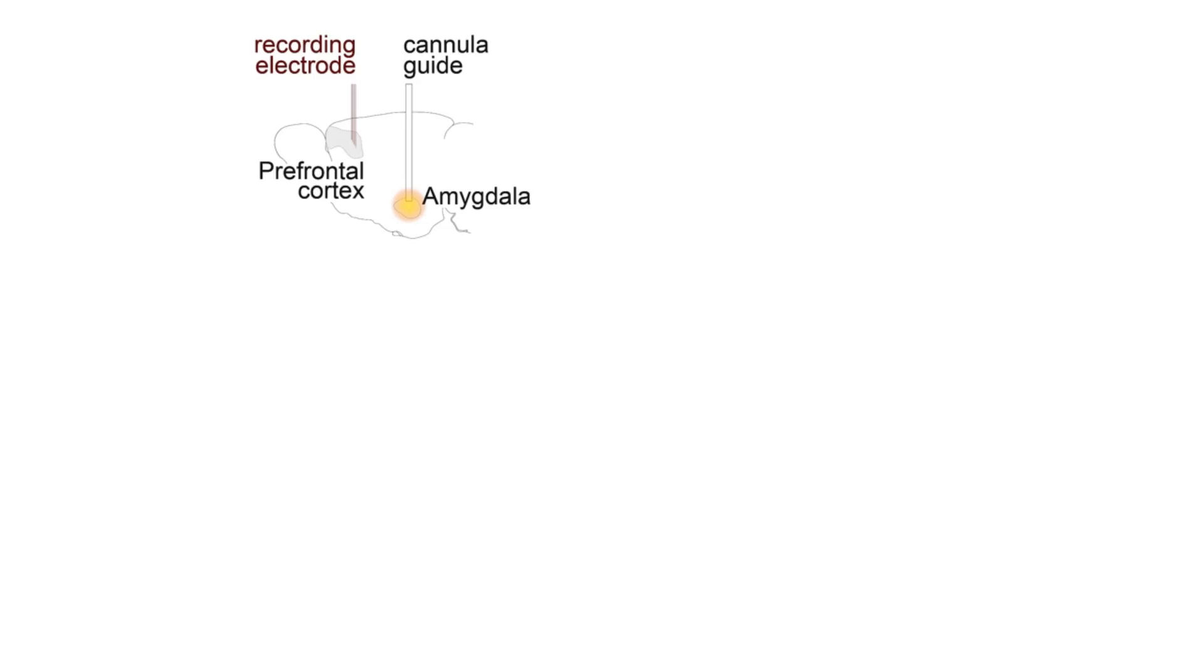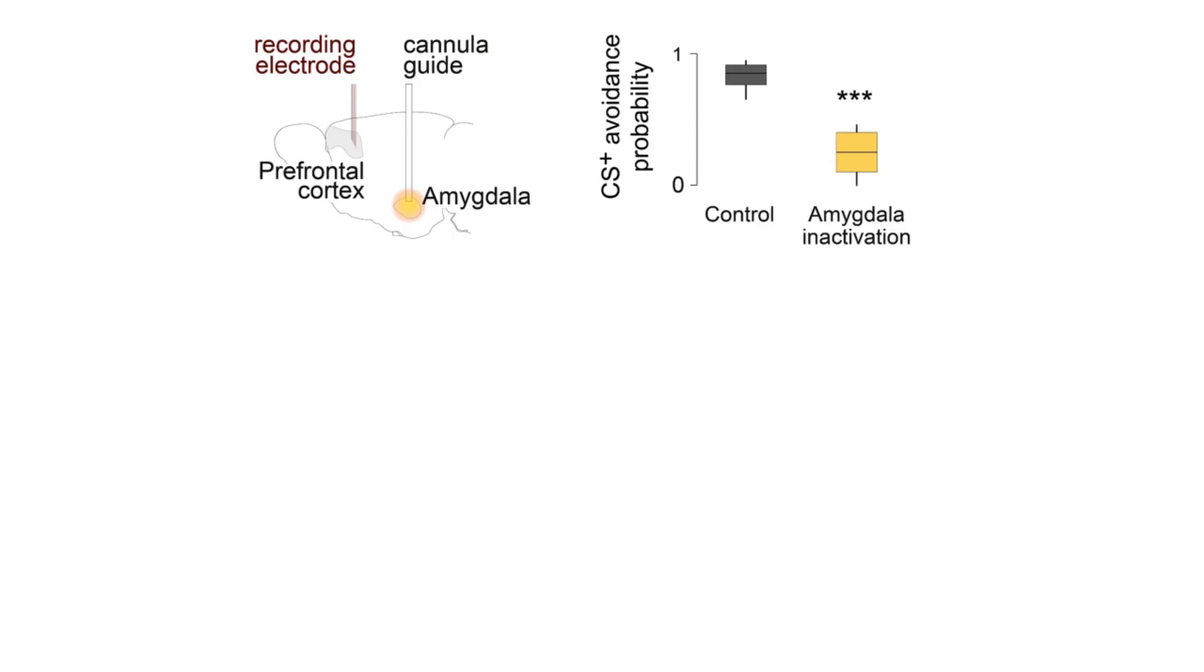When we inactivate the amygdala while recording the PFC, we observed that avoidance to CS+ was dramatically impaired. But interestingly, although PFC neuronal decoders still showed information about the presence of the sound, the information about CS+ in between pips was missing, showing that the prefrontal cortex relies on amygdala to construct sustained representations of threats from associated sensory inputs.